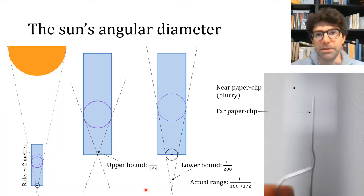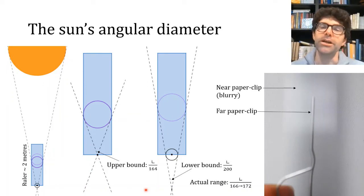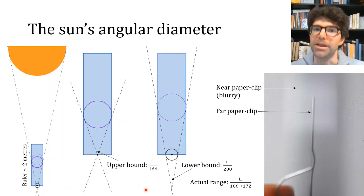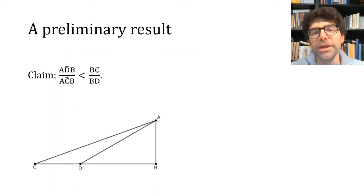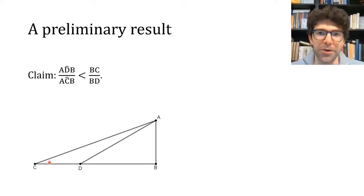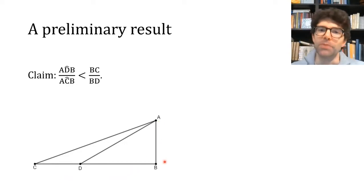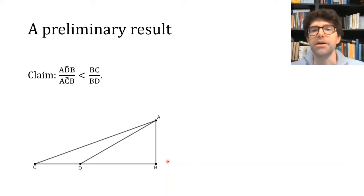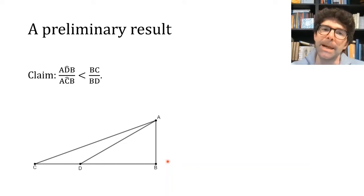Archimedes then uses these limits on the angular diameter of the sun to make an argument about the ratio of the diameter of the sun versus the distance between the centers of the earth and sun — that's the radius of the geocentric cosmos. Before getting into that argument, we need the following lemma: given two right-angled triangles with the same length upright, the ratio of the angles opposite it is less than the inverse ratio of the bases. This is equivalent in modern terms to showing that the function tan(θ)/θ is increasing.